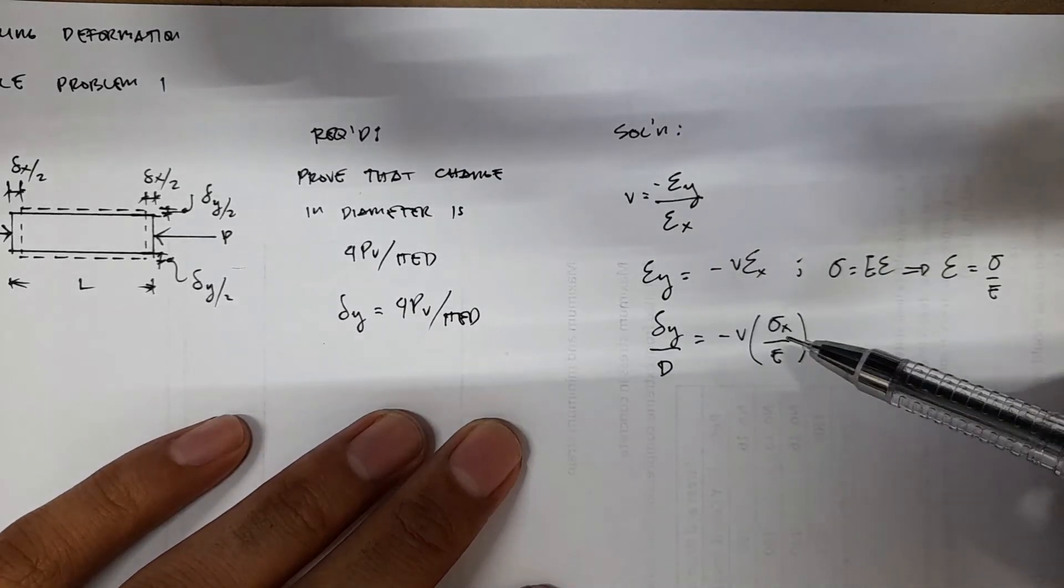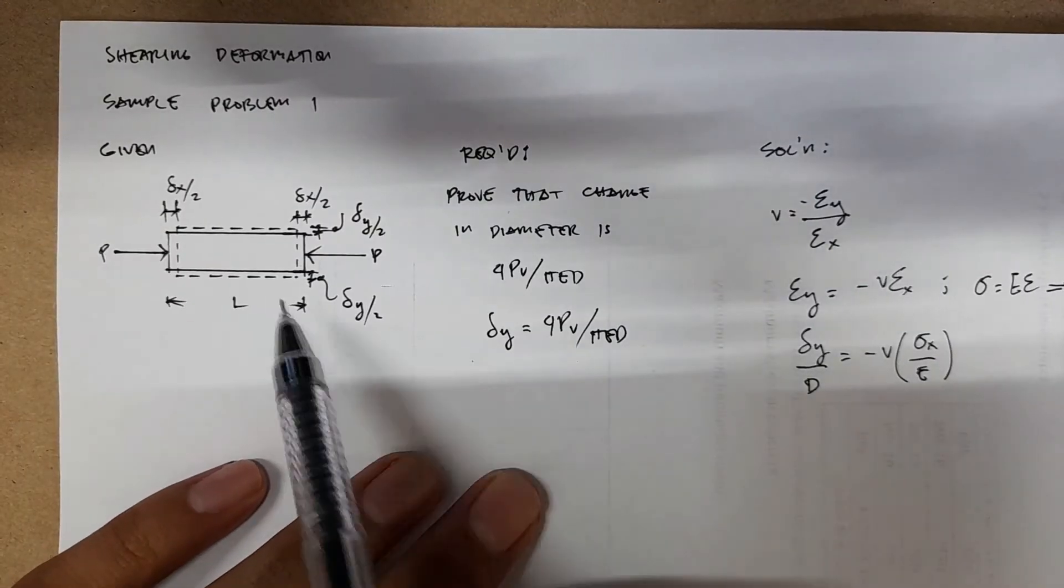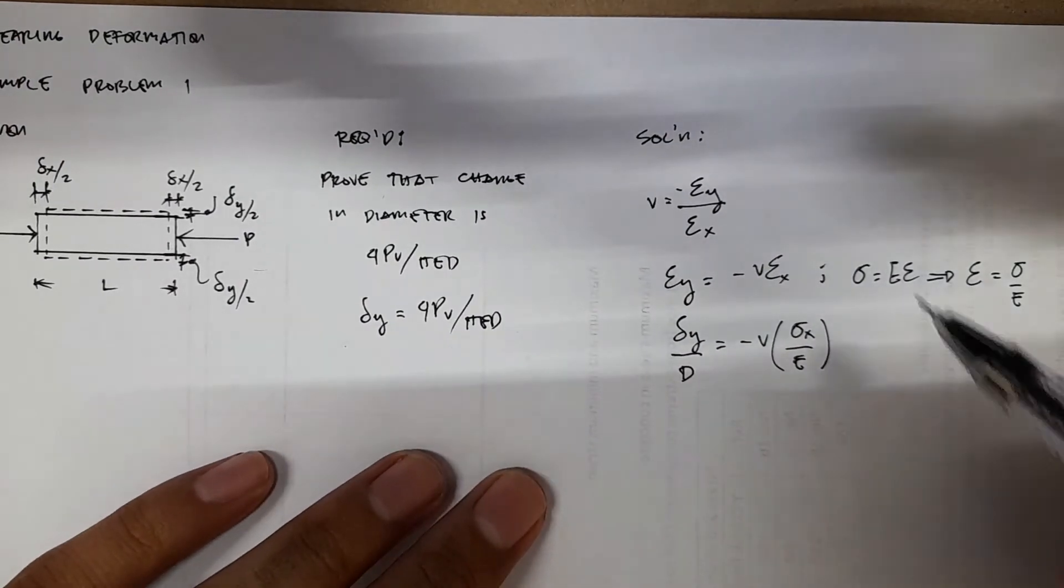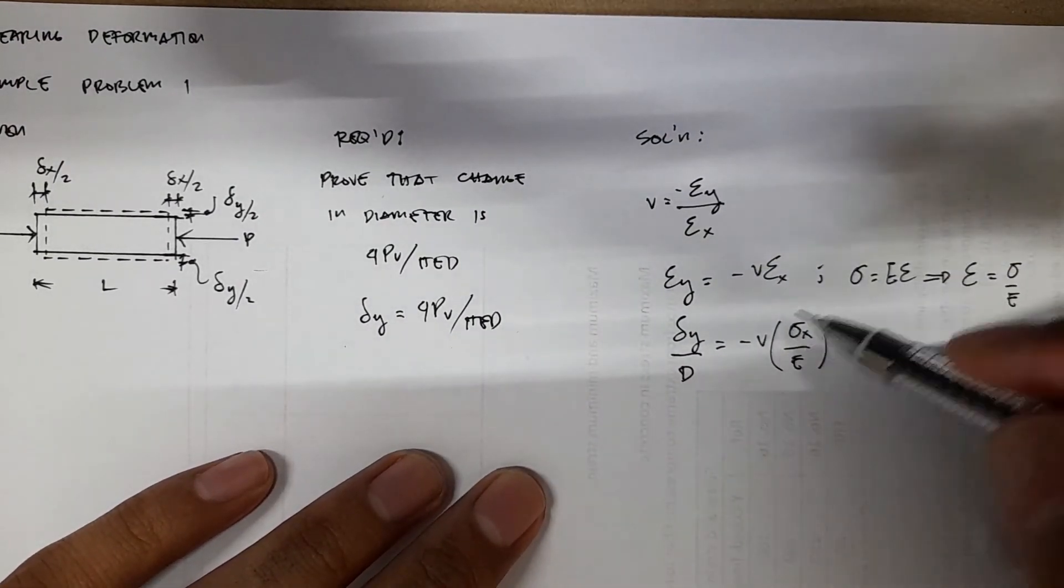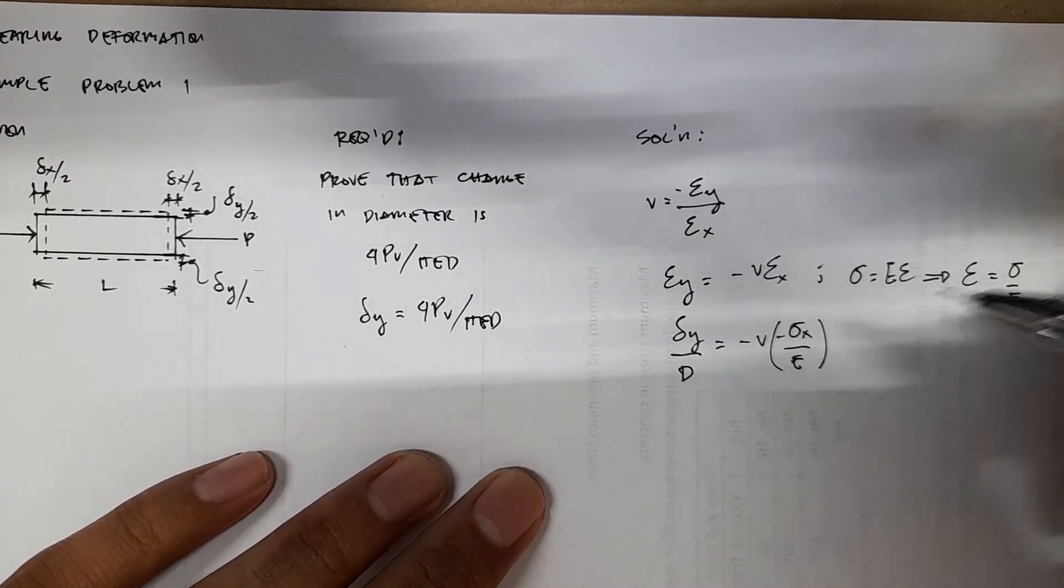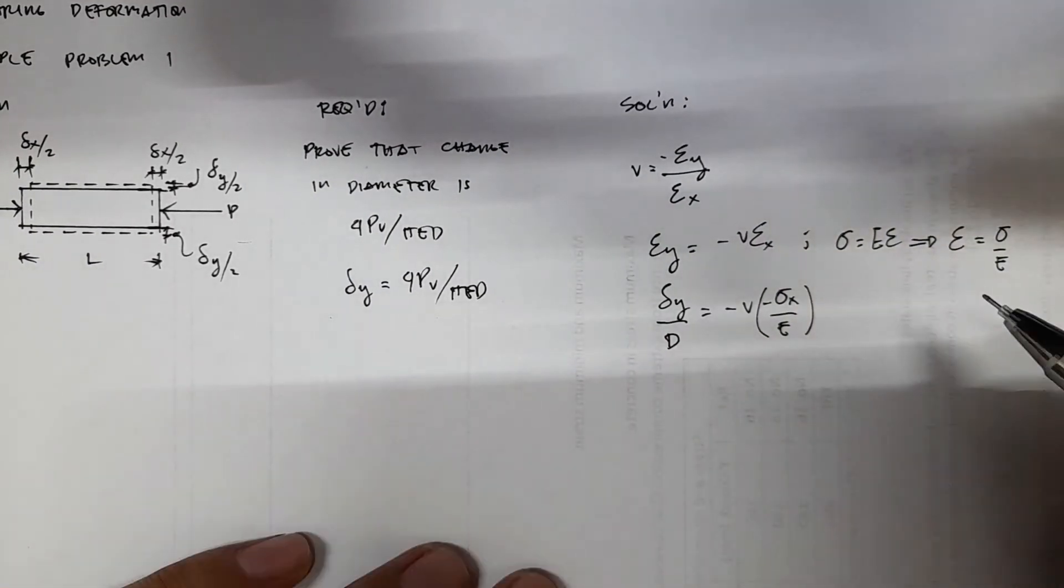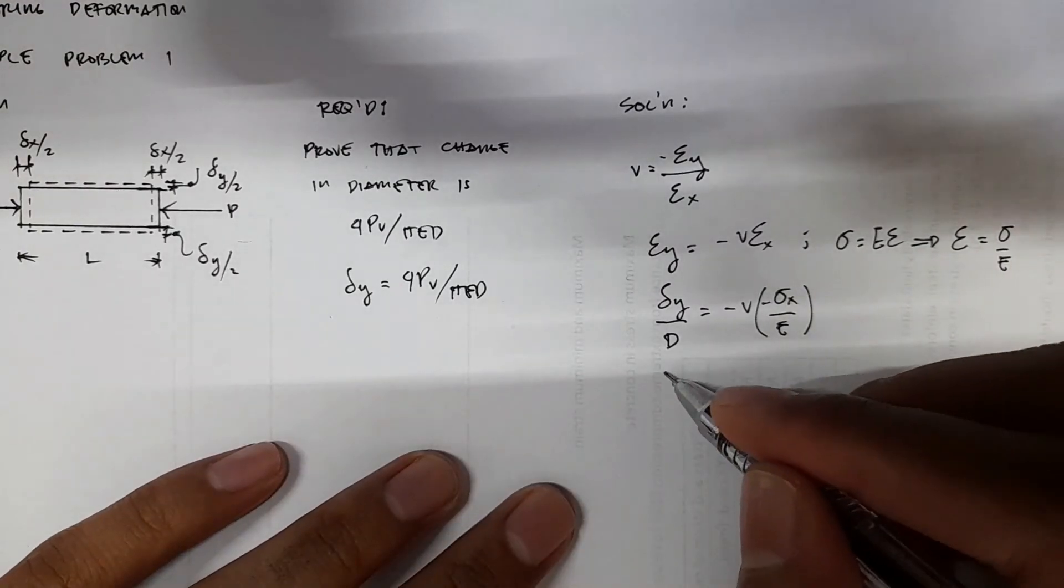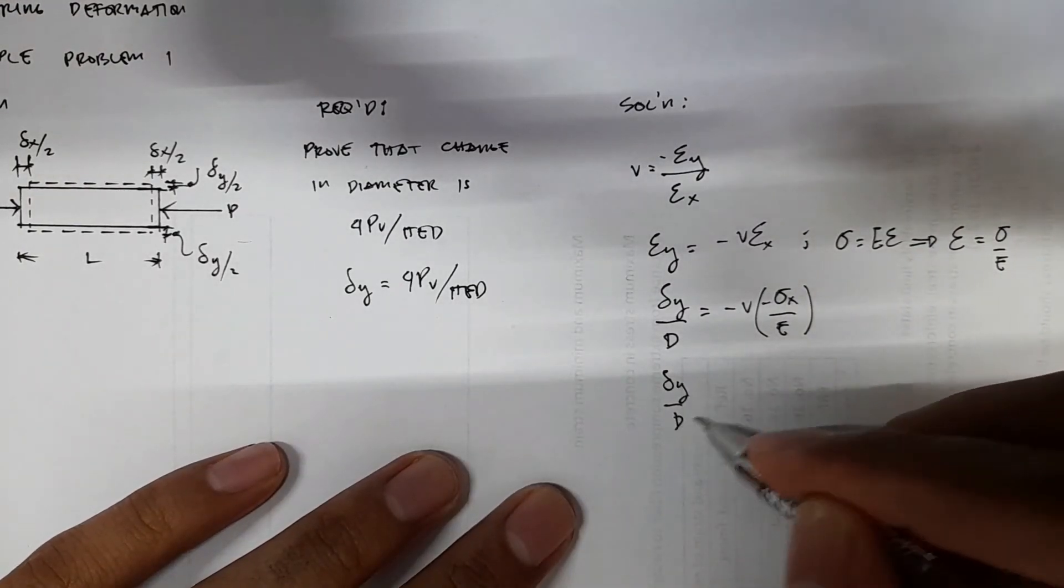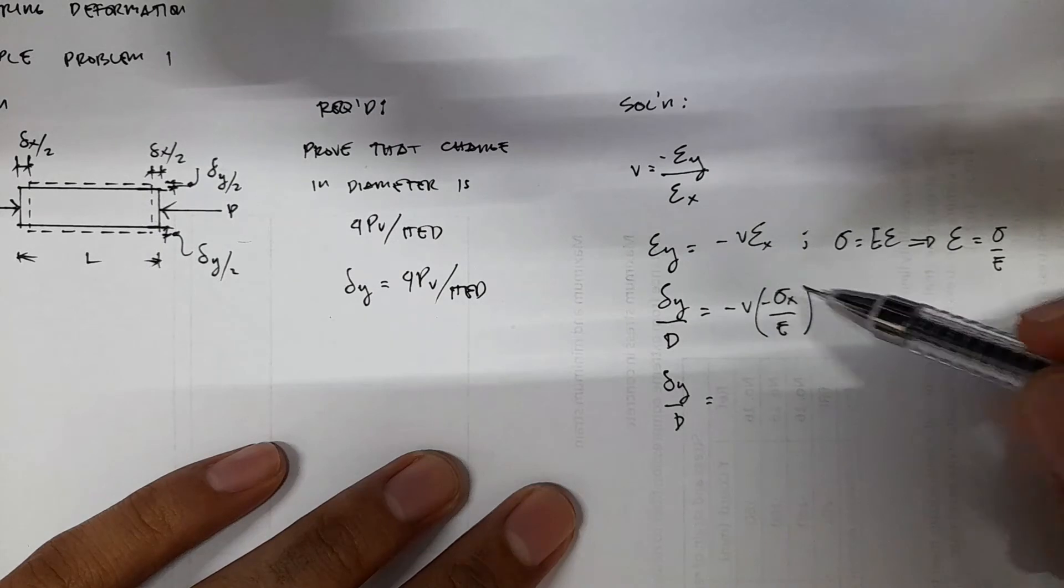And notice that the stress here, the given figure, is compressive. So you know that the sign convention for compressive stress is negative. So the negative sign here cancels out. Negative times negative is positive. So you'll have the deformation y over D.